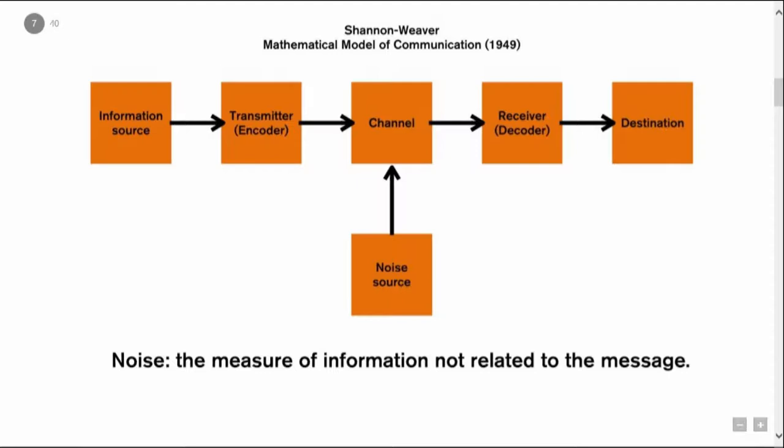Number five, destination — that's the message's final stop. And I have as number six, noise. Noise is a dysfunctional factor that includes any interference with the source's original message. Examples of noise can be screaming, loud music, static on the line, or an uncomfortable chair during a lecture. That's why I told you to sit back and relax.